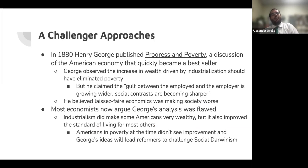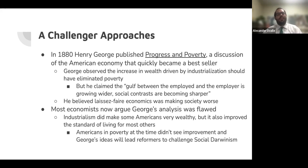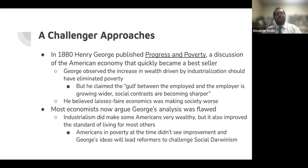In 1880, Henry George published a book called Progress and Poverty, a discussion of the American economy that quickly became a bestseller. George observed that the increase in wealth driven by industrialization should have eliminated poverty, but he claimed the gulf between the employed and the employer was growing wider and that laissez-faire, hands-off economics, was making society worse. Most economists now argue that George's analysis was flawed — industrialism did make some Americans very wealthy, but also improved the standard of living for most others. However, Americans in poverty at the time didn't see improvement, and George's ideas led reformers to challenge social Darwinism.